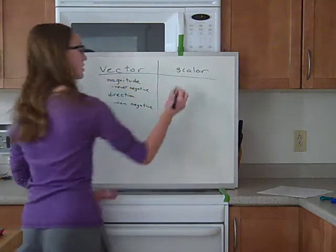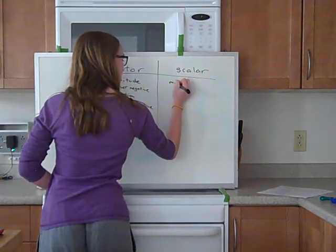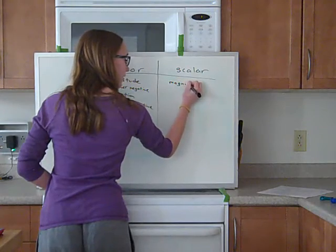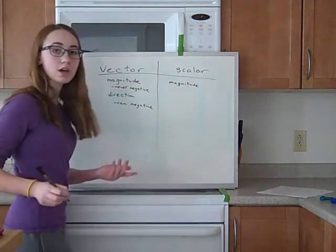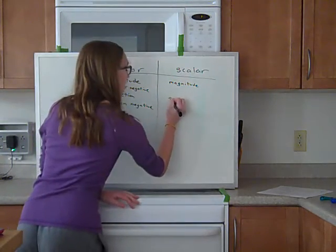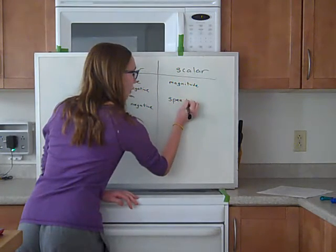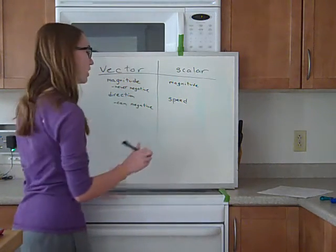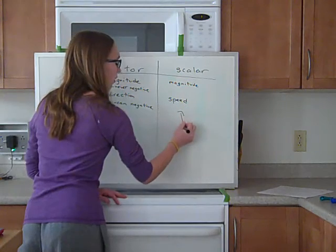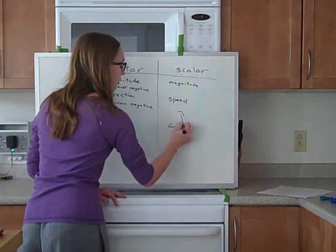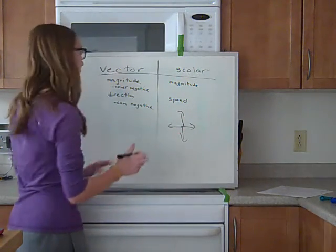And then a scalar is just magnitude. So, an example of a scalar would be speed. Speed is never negative. It's always positive. Doesn't matter which direction it goes in, if it goes up or down or to the left or the right or whatever, it's always going to be positive.